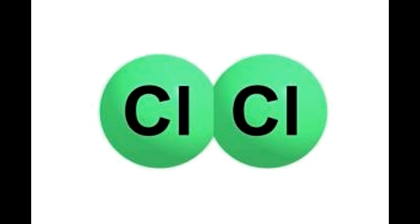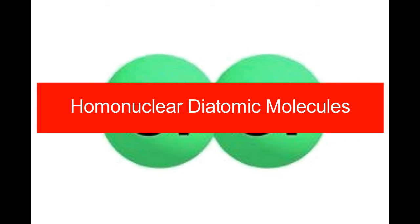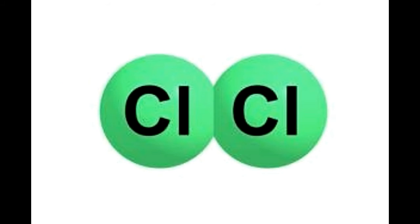A homonuclear diatomic molecule is made of two atoms of the same element joined together by a chemical bond. These molecules usually exist in the gaseous phase. Some of the gases that exist as diatomic molecules at room temperature and atmospheric pressure are H2, N2, O2, F2, and Cl2.